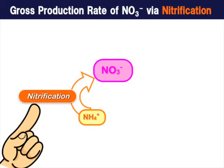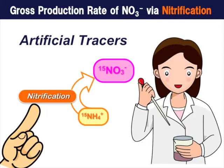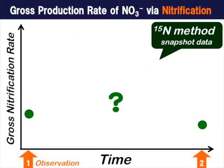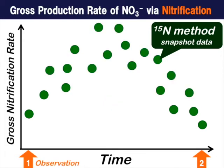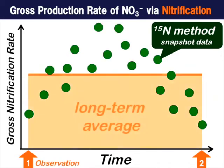Traditionally, the gross nitrification rate has been estimated via incubation experiments using artificial tracers such as N15. The N15 method, however, is a snapshot tracer approach and needs time-series observations to estimate a long-term average rate.